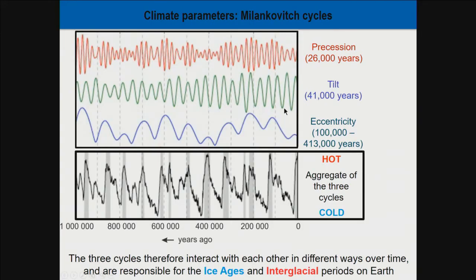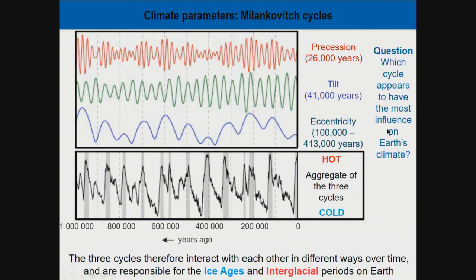Looking at a graph showing these three Milanković cycles — precession, tilt, and eccentricity — over time, we can see that they sometimes align at maxima and minima together, and sometimes are opposite. When we map ice ages and interglacial periods onto these cycles, we can see a pattern. The question is: which one of these cycles appears to have the most influence on Earth's climate?